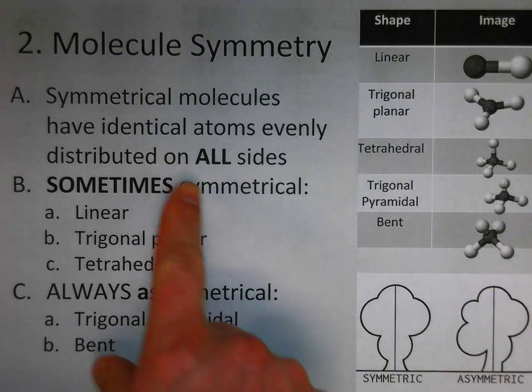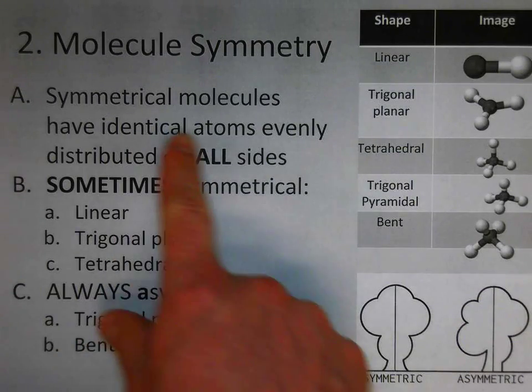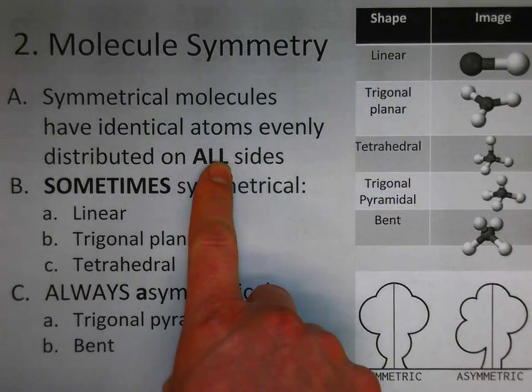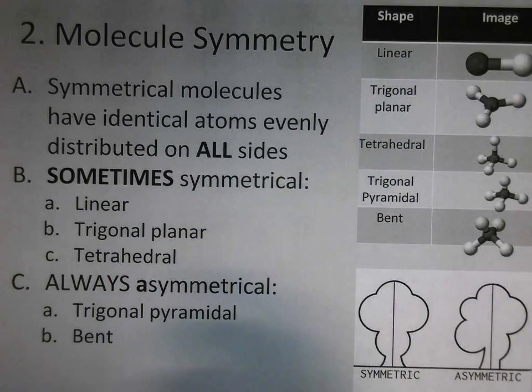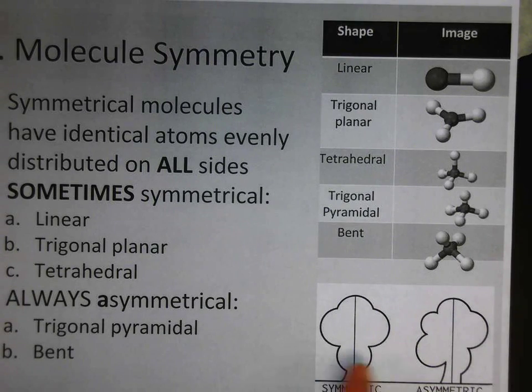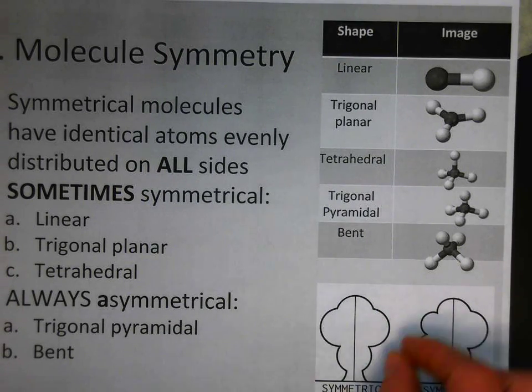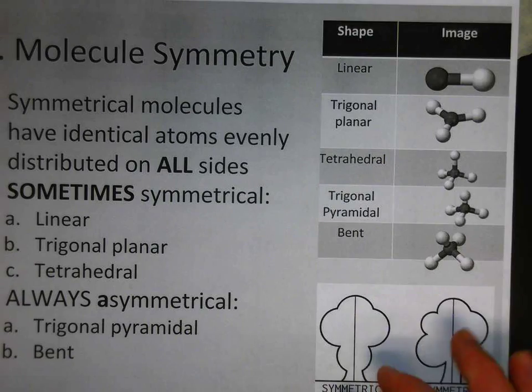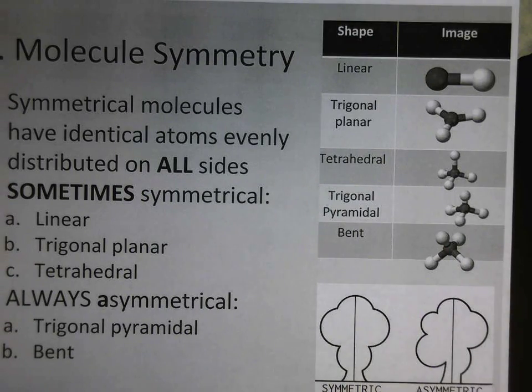So a symmetrical molecule would have identical atoms evenly distributed on all sides around a central atom. Although we might often think of symmetry as something bilateral like this tree here, in the case of a molecule we need something that's completely symmetrical all the way around.